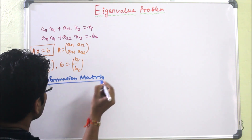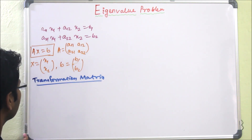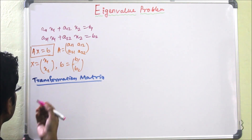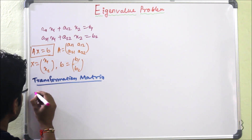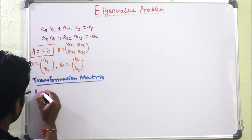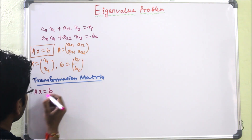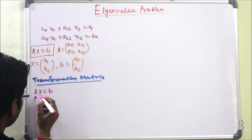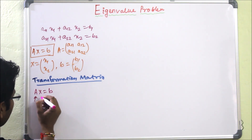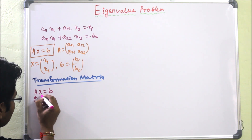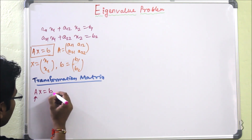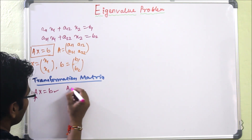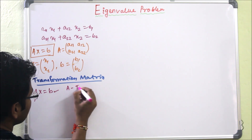The transformation matrix tells us that when we multiply matrix A by vector x, we get b. So A is called the transformation matrix.